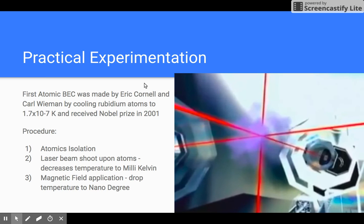The first atomic Bose-Einstein condensate was made by Eric Cornell and Carl Wieman, who cooled a gas of rubidium atoms to 1.7 × 10^-7 Kelvin and received a Nobel Prize in 2001.